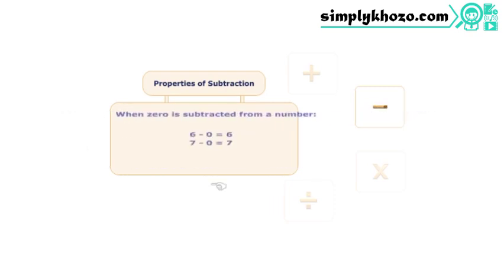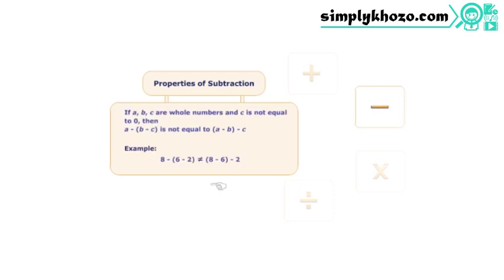When zero is subtracted from a whole number, the result is the number itself. The associative law of addition does not hold true in subtraction of whole numbers.